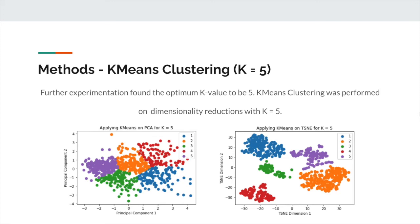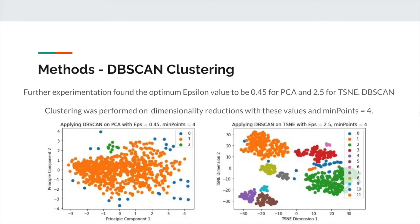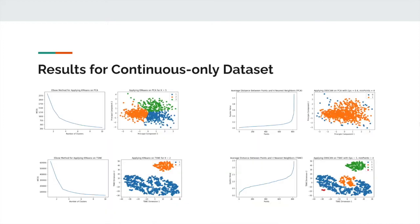After applying k-means clustering, we also applied DBSCAN clustering to both sets of dimensionality reductions. We selected 4 as the nearest neighbors value since our dimensionality reductions are two-dimensional. We plotted the epsilon values versus the number of points and used the elbow method to determine the optimum epsilon values. Further experimentation found the optimum epsilon value to be 0.45 for PCA and 2.5 for t-stochastic neighbor embedding. DBSCAN clustering was performed on the dimensionality reductions with these epsilon values and with the min points value set to 4.